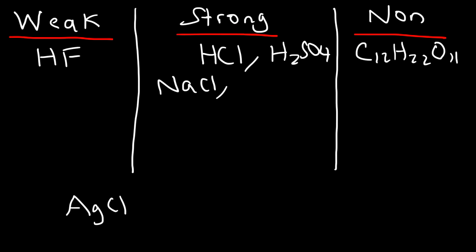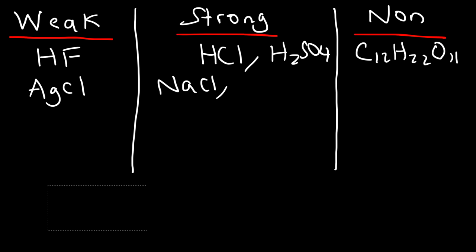What about silver chloride? According to the solubility rules, silver chloride is insoluble. It's an ionic compound, but 99% of it does not dissolve — only a small fraction dissolves. So we can classify this as a weak electrolyte; only a small percentage actually breaks up into ions.